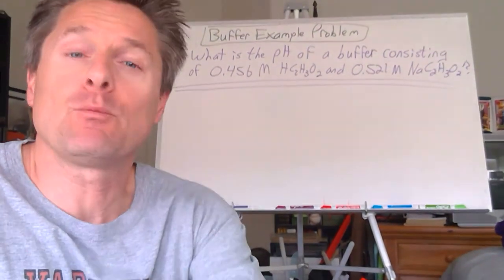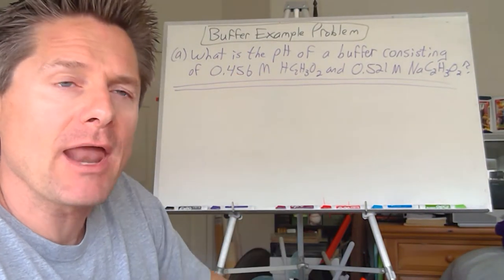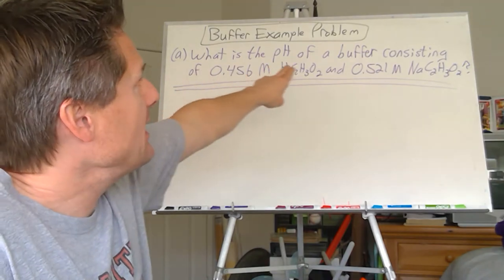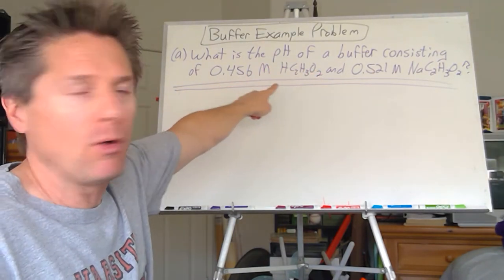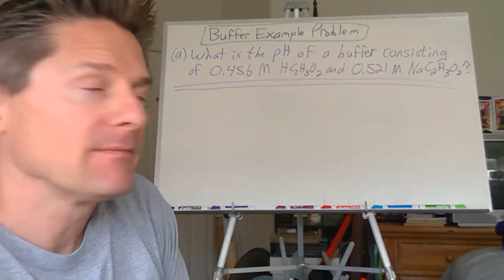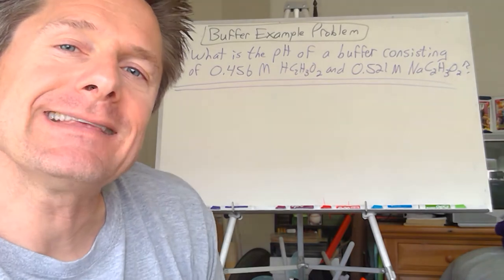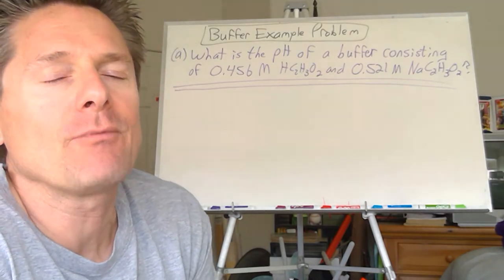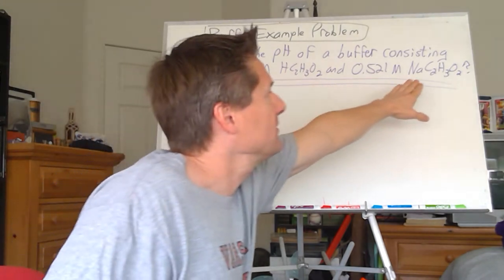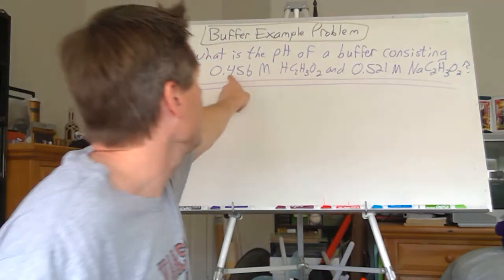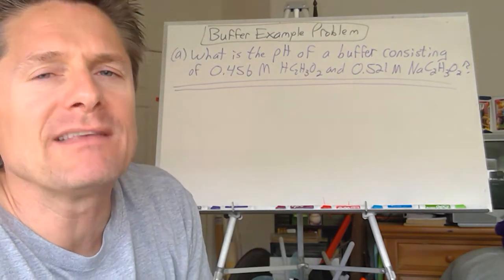Here's the problem. Part A: what's the pH of a buffer consisting of 0.456 molar acetic acid and 0.521 molar sodium acetate? Even if I didn't say buffer, you can recognize it — you've got a weak acid and the sodium salt of its conjugate base, and they're very close to being the same concentration. That's what makes it a buffer.